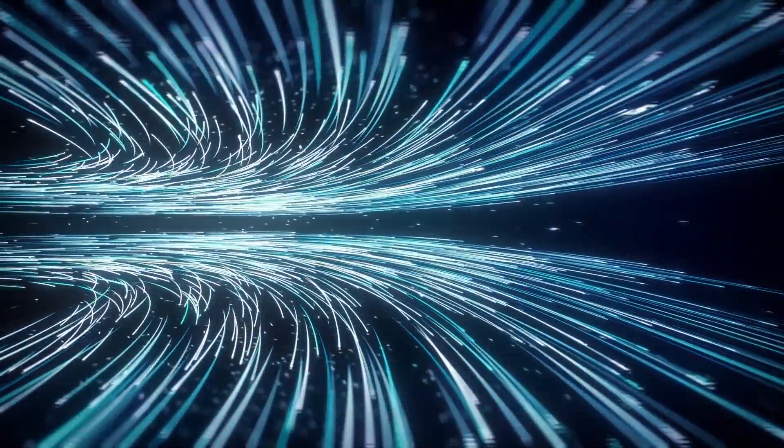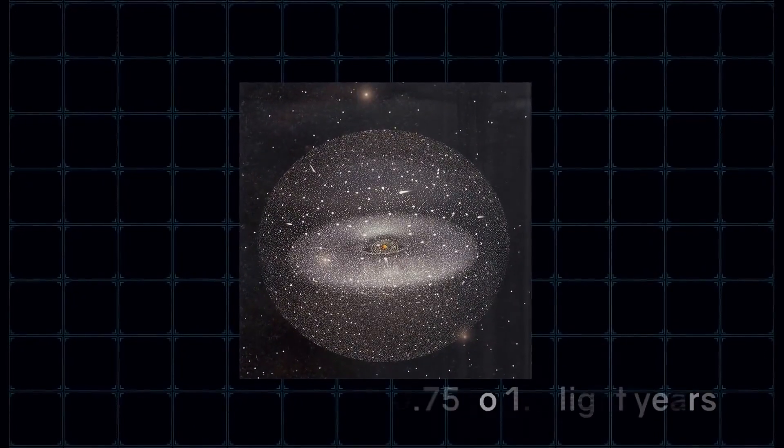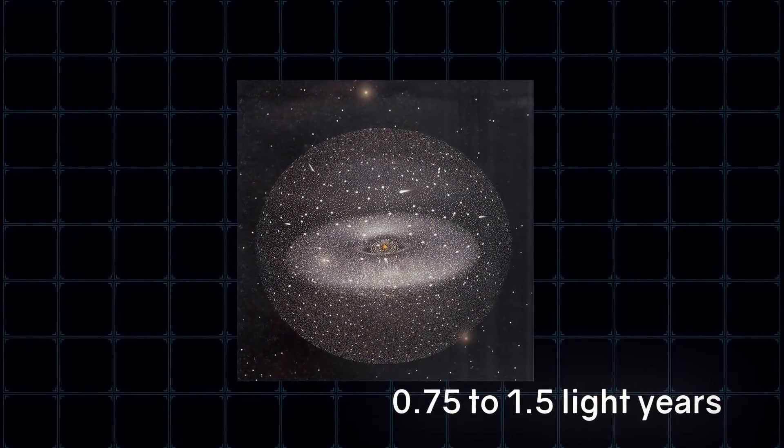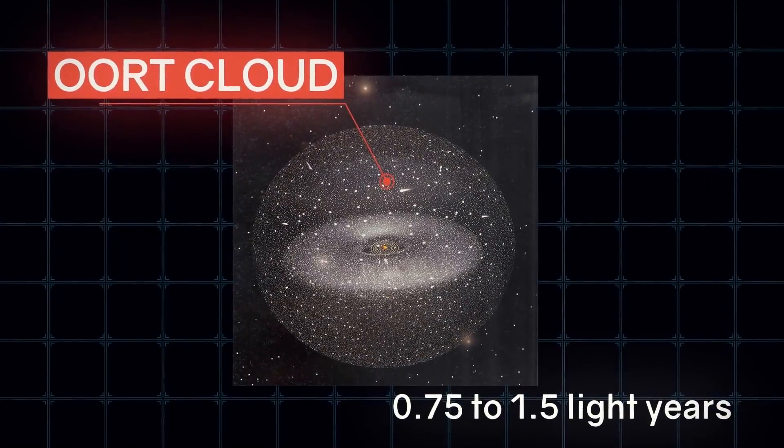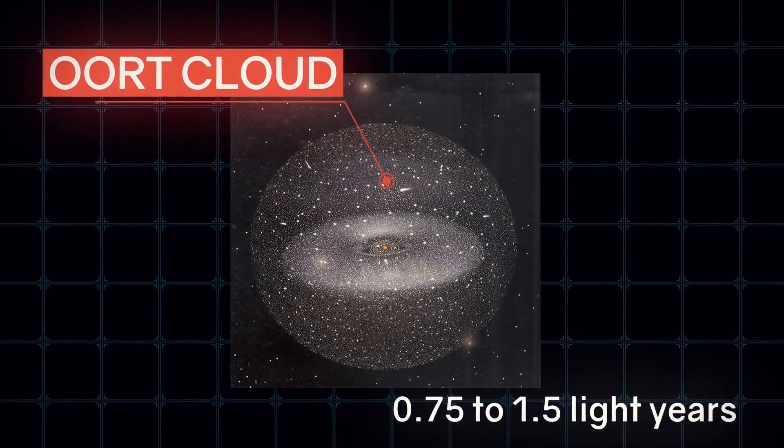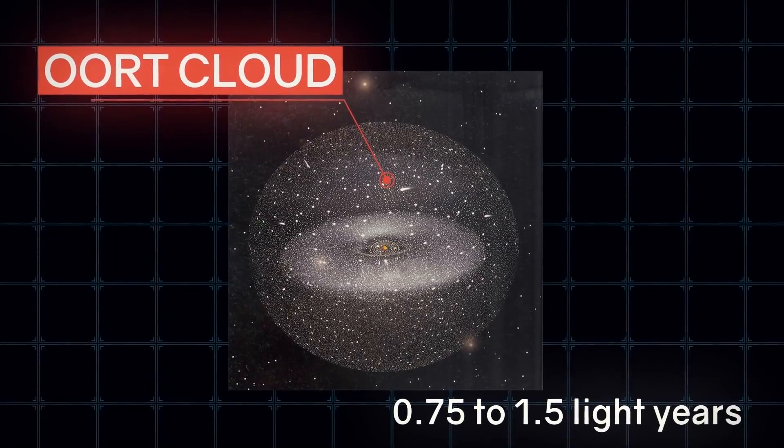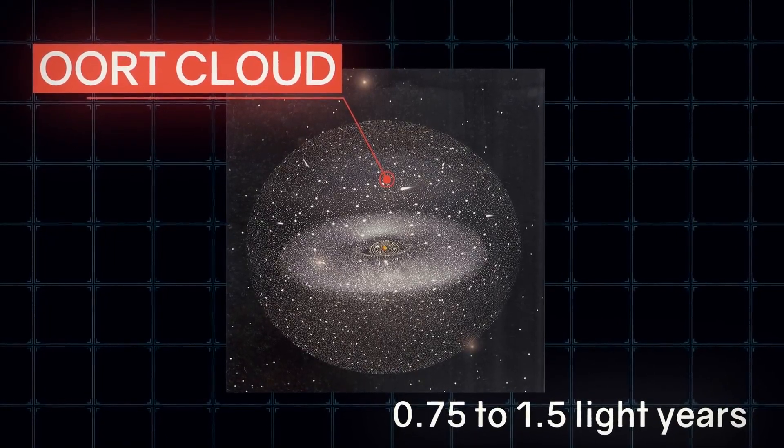The Oort cloud, a spherical cloud of ice objects up to a trillion that acts as a source of long-period comets, expands behind this knot at a distance of 0.75 to 1.5 light-years. The interstellar wind has already taken over, but the Sun's gravitational field is still holding bodies in its grip.